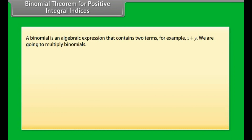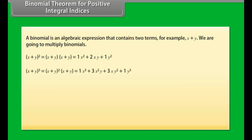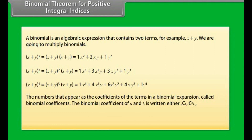Binomial theorem for positive integral indices. A binomial is an algebraic expression that contains two terms — for example, x + y. We are going to multiply binomials. The numbers that appear as the coefficients of the terms in a binomial expansion are called binomial coefficients. The binomial coefficient of n and k is written as nCk.